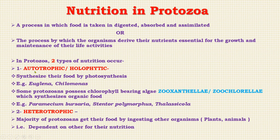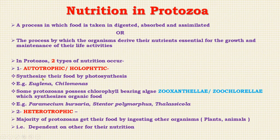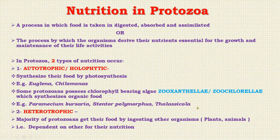First, autotrophic nutrition. In this type of nutrition, all phytoflagellates utilize carbon dioxide, water and sunlight to synthesize organic food material by photosynthesis. Such protozoa show holophytic or autotrophic nutrition, synthesizing their food by photosynthesis. Examples are Euglena and Chylomonas. Some protozoans possess chlorophyll-bearing algae — zooxanthellae and zoochlorellae — which synthesize organic food. Examples include Paramecium bursaria, Stentor polymorphus and Thalassicola.